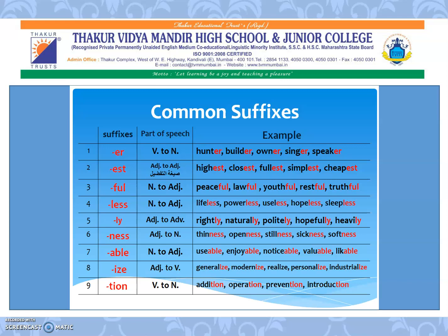The suffix NESS changes adjectives to nouns: thin/thinness, open/openness, still/stillness, sick/sickness, soft/softness. The suffix ABLE changes nouns to adjectives: use/usable, enjoy/enjoyable, notice/noticeable, value/valuable, like/likable — note the E is omitted in 'value' and 'like.' The suffix IZE changes adjectives to verbs: generalize, modernize, realize, personalize, industrialize.